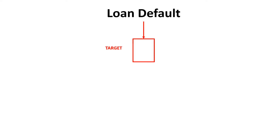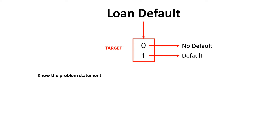In this loan default data, we have one variable called 'target' which has values zero and one, where zero indicates no default and one indicates default. For any exploratory data analysis, it is important that we have a view of what we want to get out of it — that's called the problem statement. There could be two situations: one when we already know the problem statement, and the other when we don't.